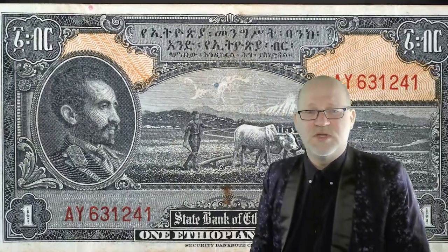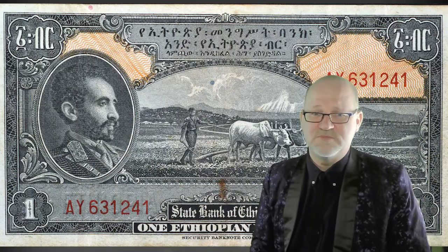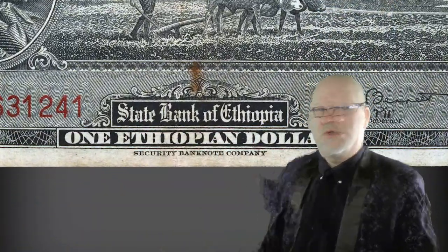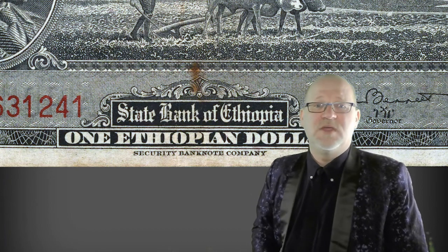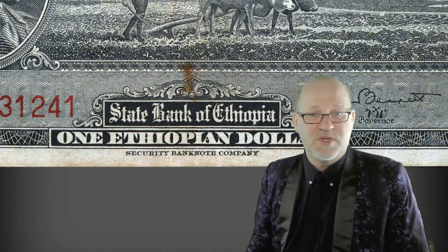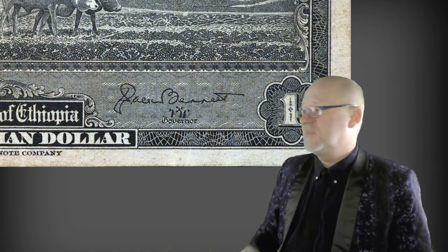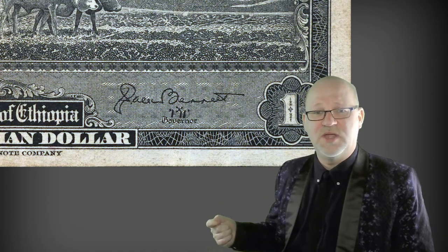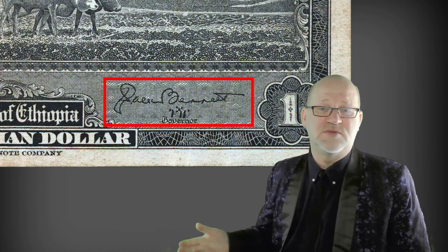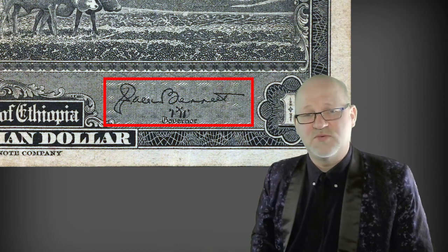The United States helped Ethiopia to create this new currency through a loan of 5.4 million ounces of silver, despite British interests attempting to force a currency based on the pound sterling. The Security Banknote Company left its mark beneath the state bank, and the governor — or general manager of the bank, who was an American — signed the note. In this case it was the second governor of the bank, Jack Bennett, who held the position from 1949 to 1953.